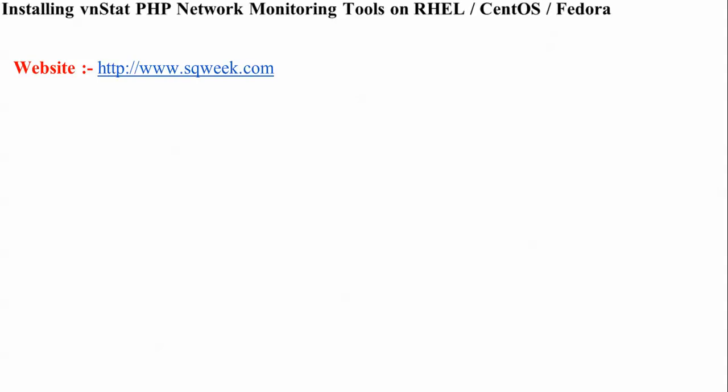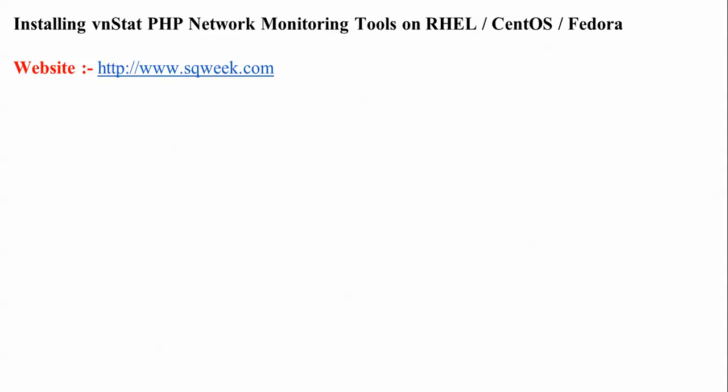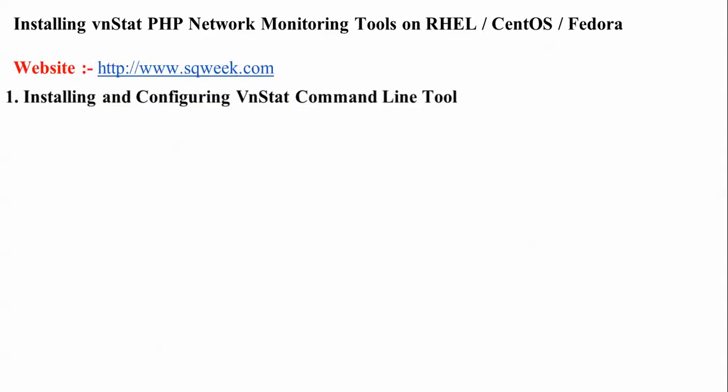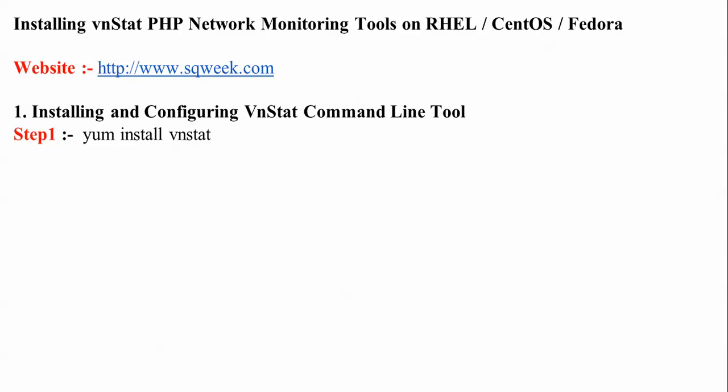The vnStat PHP website is www.sqweeks.com. Now let's begin installing. In the terminal, type 'yum install vnstat' to install vnStat. After that, we'll check the vnStat interface using the Ethernet interface.